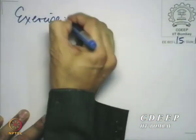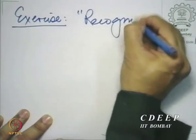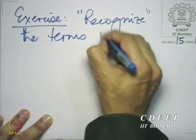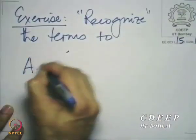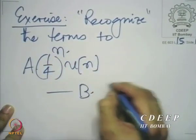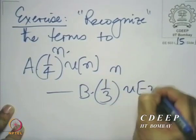I leave it to you as an exercise to recognize these terms and show that they come together to form A·(¼)ⁿ·u[n] − B·(⅓)ⁿ·u[−n−1].